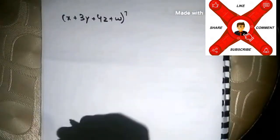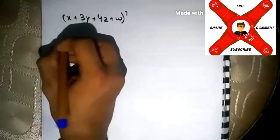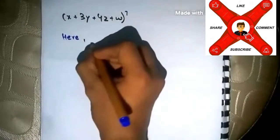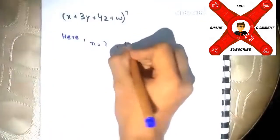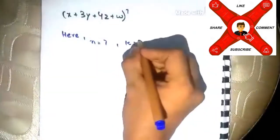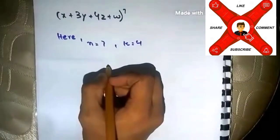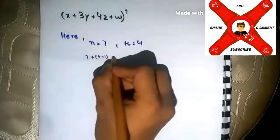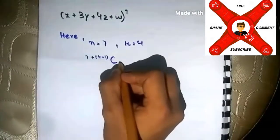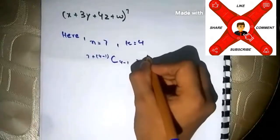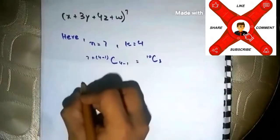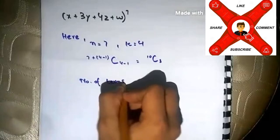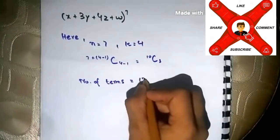Now let's take another example for multiple variables. In this question, n will be 7 and k will be 4. We simply put it in the formula: 7 plus 4 minus 1 combination 4 minus 1, which gives us 10 combination 3. By solving it, the number of terms in this expansion will be 120.